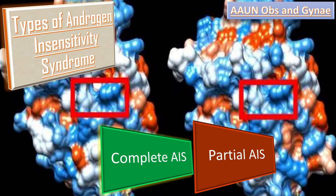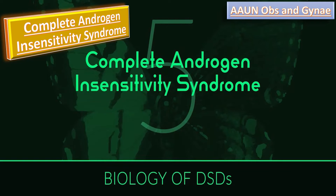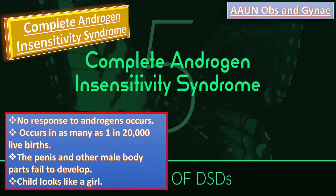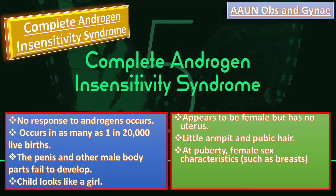There are two types of AIS: complete AIS and partial AIS. In complete Androgen Insensitivity Syndrome, there is no response to androgens. The complete form occurs in as many as one in 20,000 live births. The penis and other male body parts fail to develop; at birth the child looks like a girl. A person with complete AIS appears female but has no uterus, and has very little armpit and pubic hair. At puberty, female secondary characteristics such as breast development occur; however, the person does not menstruate and is infertile.